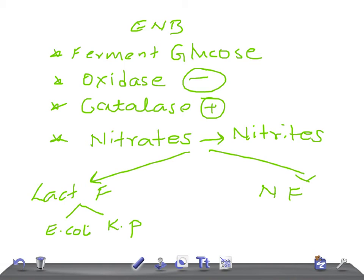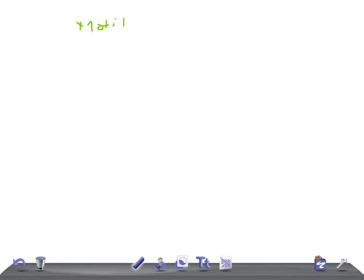Now let's move on to the non-lactose fermenting Enterobacteriaceae. We classify these into two subtypes: motile and H2S-producing, and the opposite — non-motile and non-H2S-producing. Under the motile and H2S-producing group, we have two important species: Proteus and Salmonella.